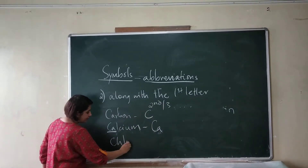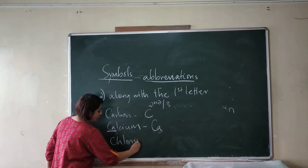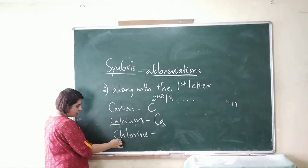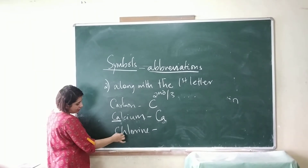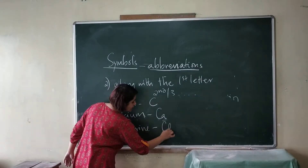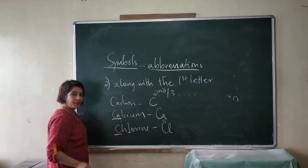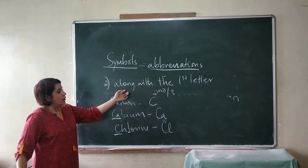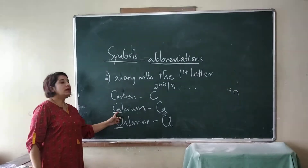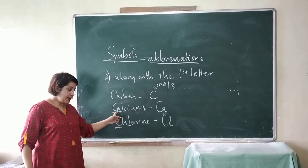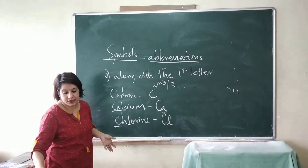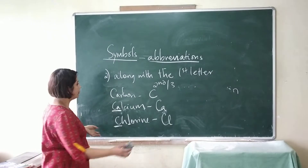Chlorine also begins with C. So we write the first letter C and then another letter to distinguish it. So if the first letter is the same, we use the second, third, or fourth letter. This is the second rule.